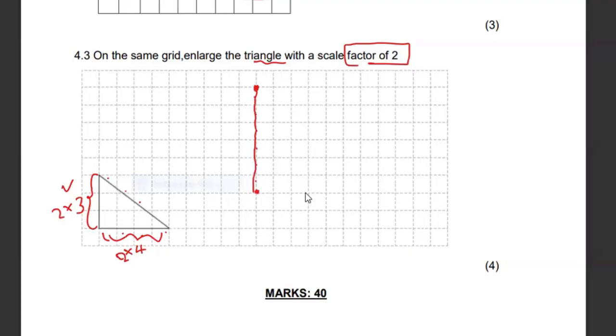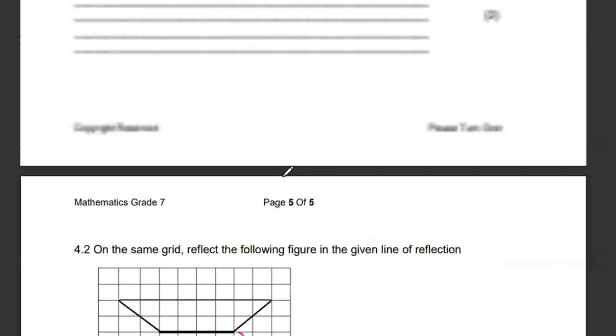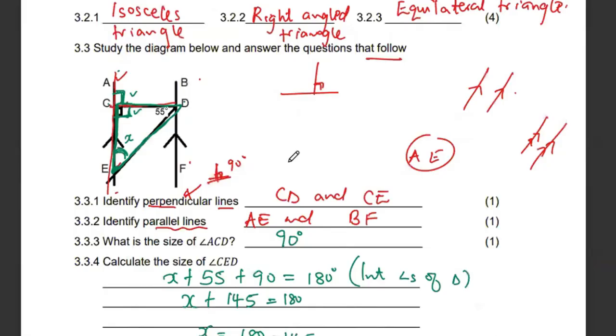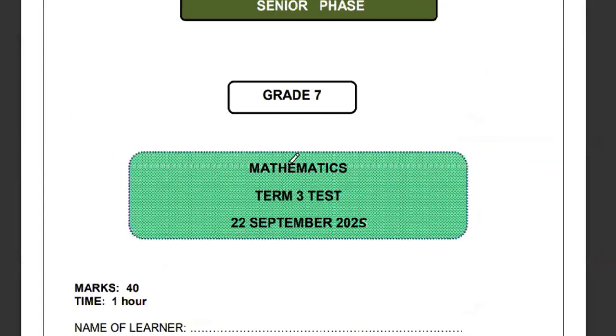And then this side, I'm going to have eight. So it's one, two, three, four, five, six, seven, eight. And then extend that. So one, two, three, four, five, six, seven, eight. And then I can just connect this. All right, so that becomes the enlarged triangle. And that brings us to the end of this paper. So I wish you guys all the best in your preparation. And let's meet again when we see each other. Bye-bye.